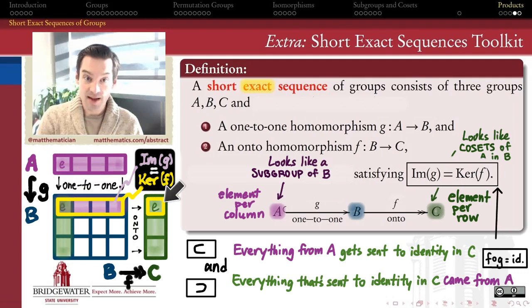So coming from A means it gets sent to the identity, and conversely, getting sent to the identity in C means it must have come from A.